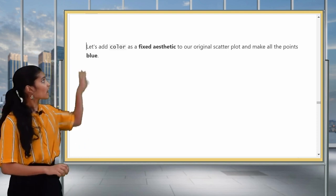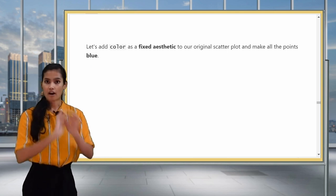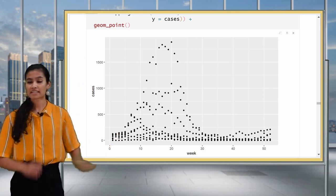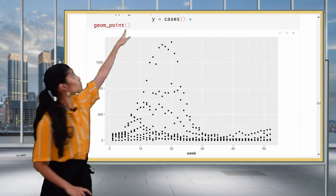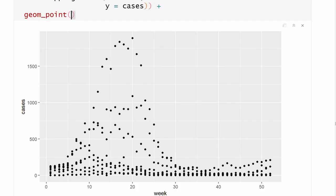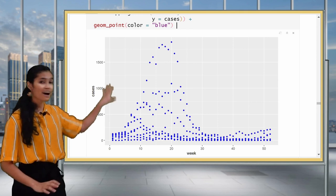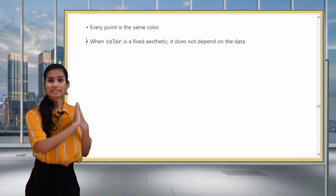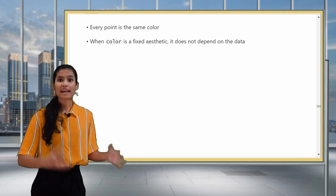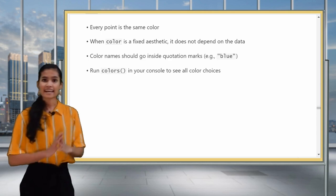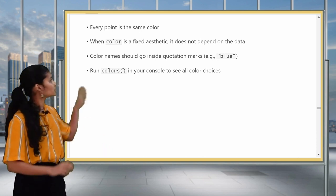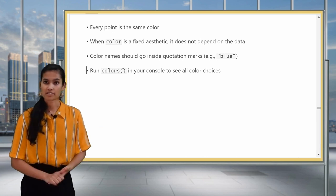The best way to understand the difference between fixed aesthetics and aesthetic mappings is with some examples. So let's get started and use color as a fixed aesthetic in our original scatterplot to make all the points blue. So here's the code that we used to create our original scatterplot. Here there are no color mappings, and remember the fixed aesthetic goes inside geom point, so over here I'm going to enter color equals blue. Now if I run this code, you'll notice that the color of the points have changed. They are all now uniformly this blue color. So not only is every point the same color, this uniform color has nothing to do with the data.